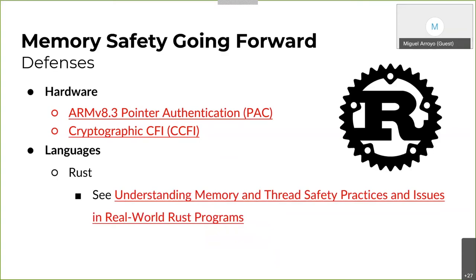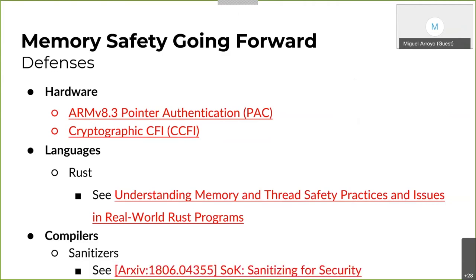We also have languages such as Rust, which has reasonable performance overheads while providing stronger memory safety guarantees than C and C++. However, it's still unclear just how much benefit it will actually bring. Rust has an 'unsafe' keyword that allows you to bypass all of its checks, and according to this linked paper, it may be more common than we think. Finally, sanitizers and fuzzers have been shown to be a promising approach to identifying and eradicating memory safety bugs. We've already had a good workshop on fuzzers, so a good follow-up might be on sanitizers and how they work.